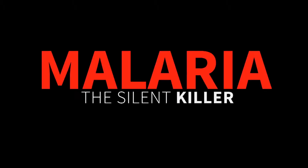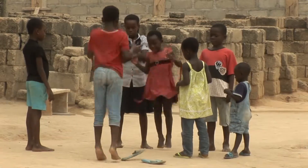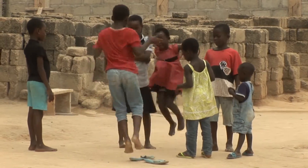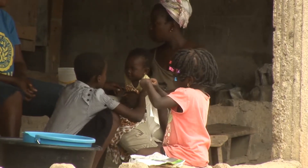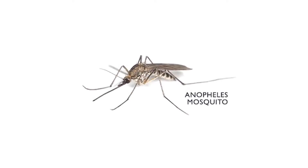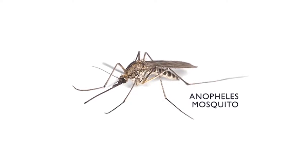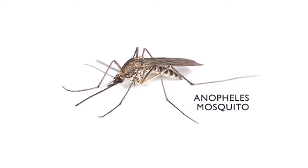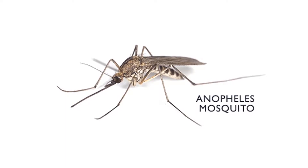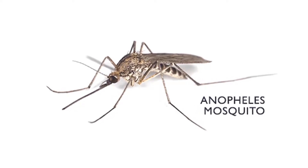The silent killer: malaria. Over 3,000 children die of malaria each day. Malaria is caused by the Anopheles mosquito, but have we pondered over what brings about these mosquitoes?